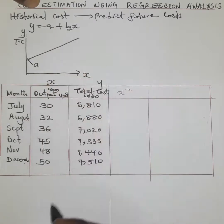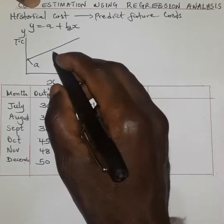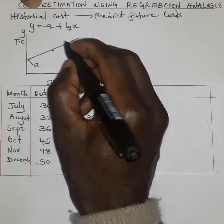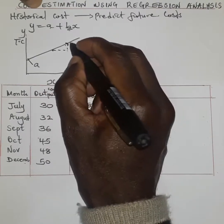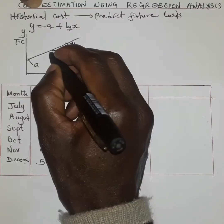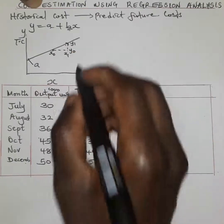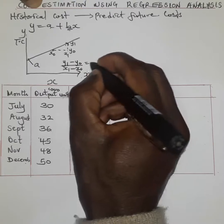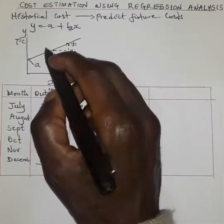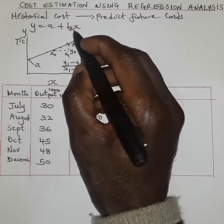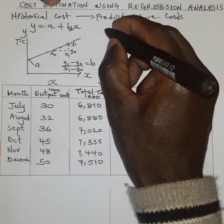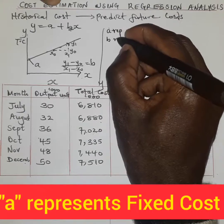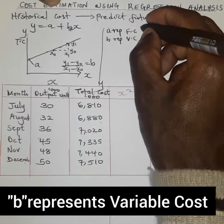Then we have b, which normally refers to the gradient of the line. You can get the gradient by identifying any two points: (y1 - y0) divided by (x1 - x0) gives us the value of b. Because b keeps on changing along the line it is referred to as the variable cost. So a represents the fixed cost while b represents the variable cost in cost production.